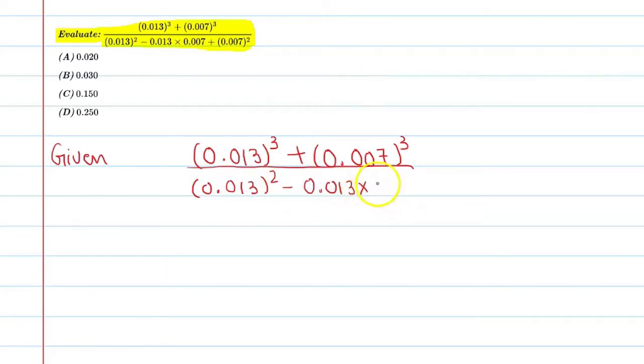In this question we need to solve this given expression, calculate the value. First, let's write the given: 0.013 whole raised to power 3 plus 0.007 whole raised to power 3 upon 0.013 raised to power 2 minus 0.013 into 0.007 plus 0.007 whole raised to power 2.